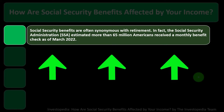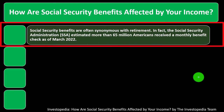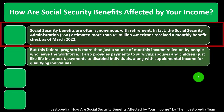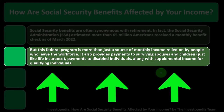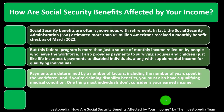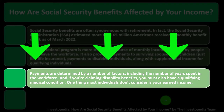I would be skeptical about depending on Social Security if you're further away from retirement age because the law could change. If you're closer to retirement, it's more of a guaranteed thing. The Social Security Administration estimated more than 65 million Americans received a monthly benefit check as of March 2022. This federal program also provides payments to surviving spouses, children, disabled individuals, and supplemental income for qualifying individuals.